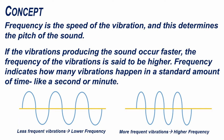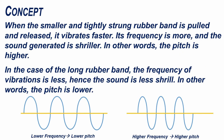Frequency is the speed of the vibration and this determines the pitch of the sound. If the vibrations producing the sound occur faster, the frequency of the vibrations is said to be higher. Frequency indicates how many vibrations happen in a standard amount of time, like a second or minute. When the smaller and tightly strung rubber band is pulled and released, it vibrates faster. Its frequency is more and the sound generated is shriller.